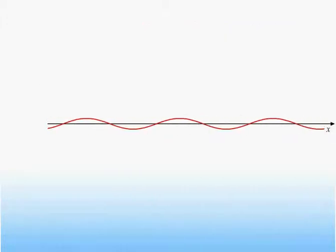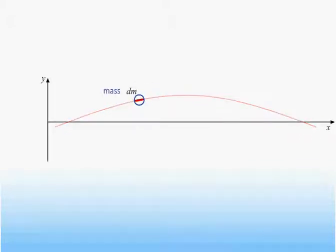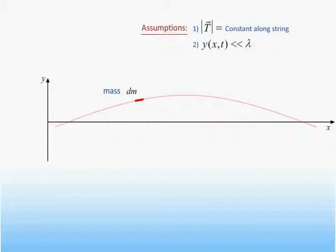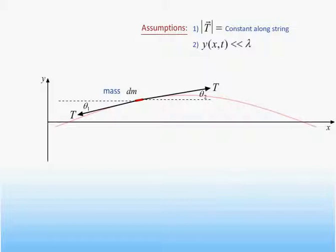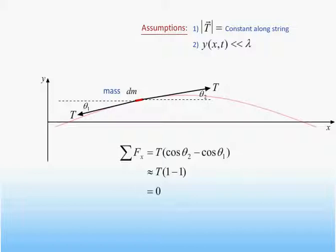Here we see a wave traveling on a string. We will freeze the picture and focus in on one tiny element of the string. We will assume that the tension in the string is the same everywhere along its length and that the displacement of any part of the string from equilibrium is small compared to the wavelength. This second assumption enforces the requirement that the angle that any part of the string makes with the x-axis will always be small, which will simplify our calculation. In order to apply Newton's second law, we will need to determine the net force on a small element of string. The net force in the x direction is the difference in the x components of the tension on either side of the string element. Since the sine of a small angle is very close to one, this difference will be close to zero and the net force on the string element in the x direction vanishes.